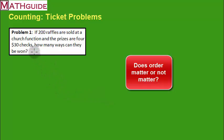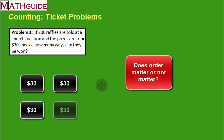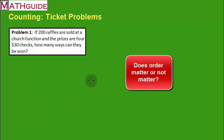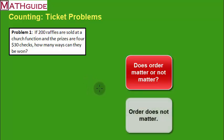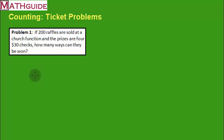You have to look at this problem and determine: does order matter or does order not matter? There are $30 checks and there's four of them. When you pull the first raffle from the bin, does it matter if you're the first person chosen or the second or third or fourth? No it doesn't matter. Each of the prizes is a $30 check, so whether you're the first person being called or the second or third or fourth, each of those prizes are identical, so it doesn't matter in what order the raffles are pulled from the bin.